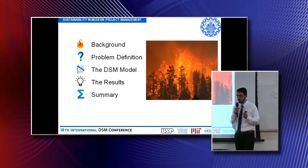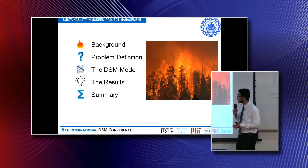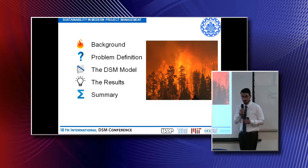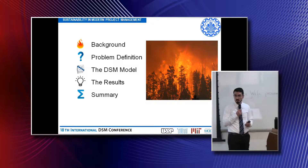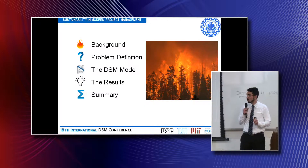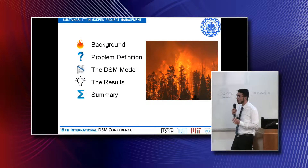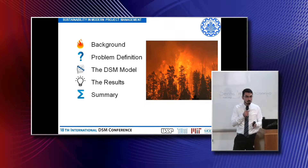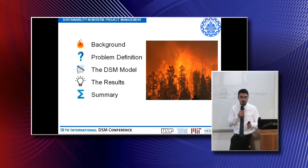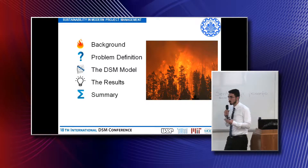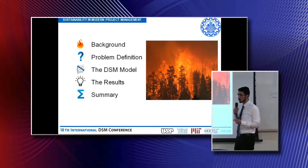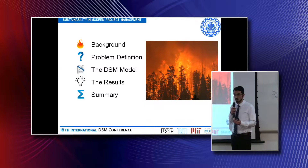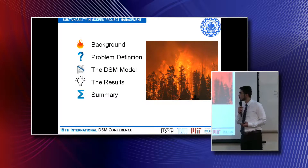And we are fighting against these wildfires with very, very old tactics — old like World War II. What is being done in this research is using modern techniques like the dependency structure matrix to try to improve the effectiveness and efficiency of a process architecture used to fight against wildfires.